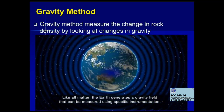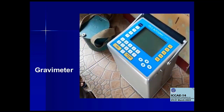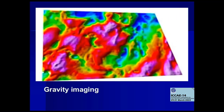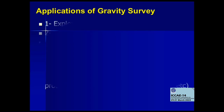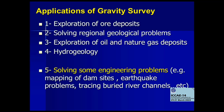The third method is the gravity method, based on changes in rock density by looking at changes in gravity. Using a gravimeter we can do gravimetric surveying, and gravity imaging can trace geological structures and crustal deformation. Applications of gravity surveying include exploration of deposits, solving regional geological problems, exploration of oil and natural gas deposits, and applications in hydrogeology.